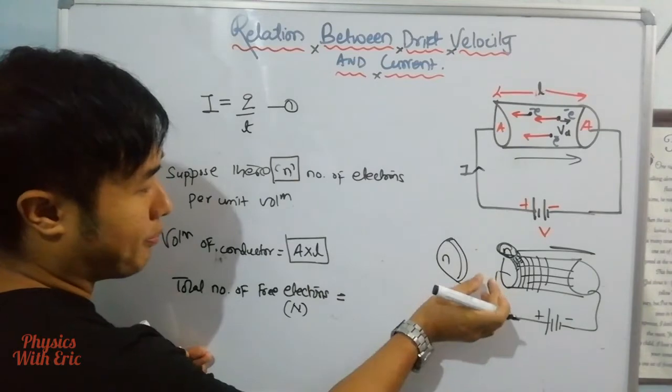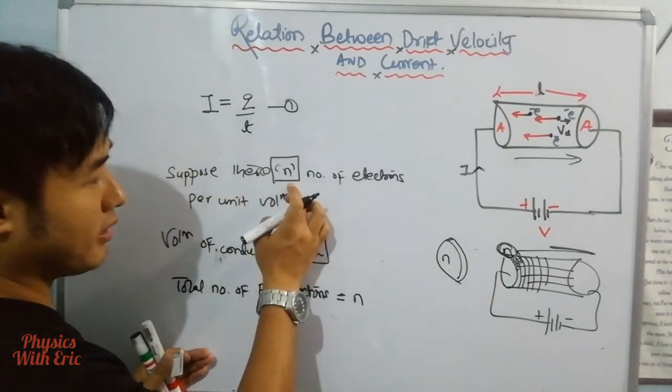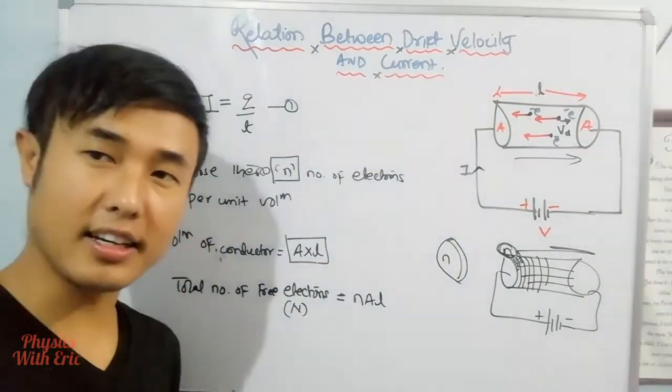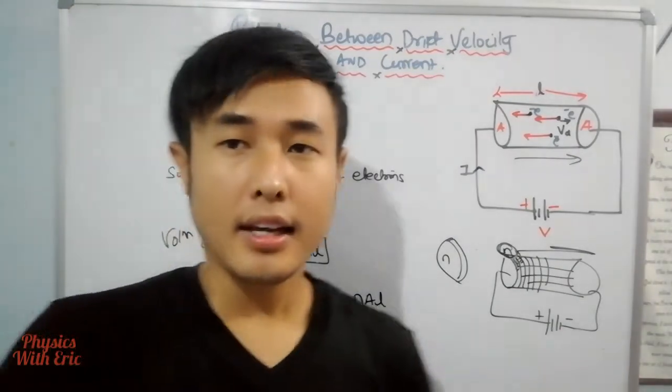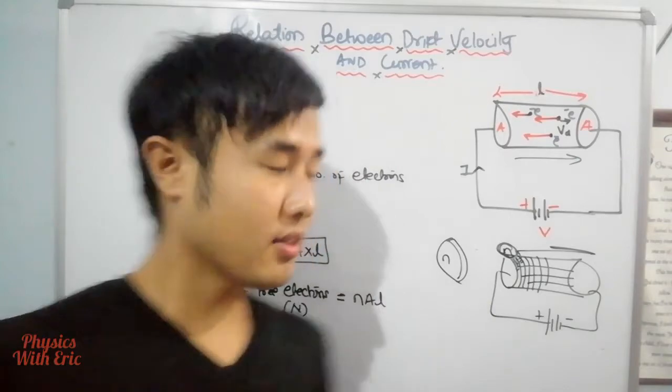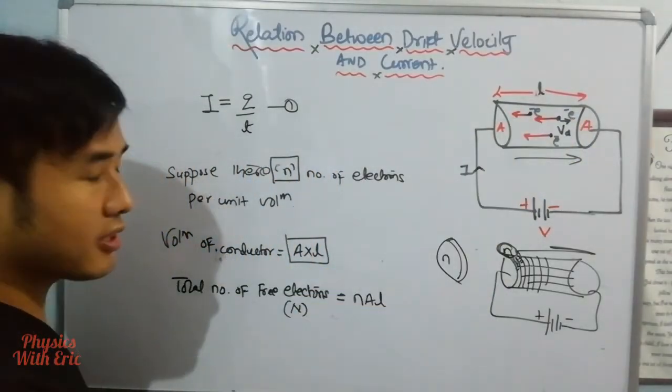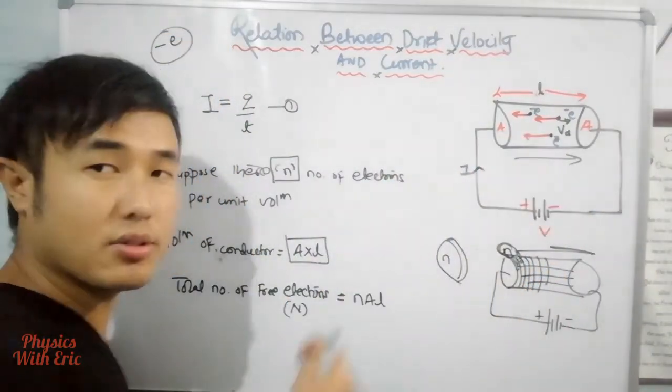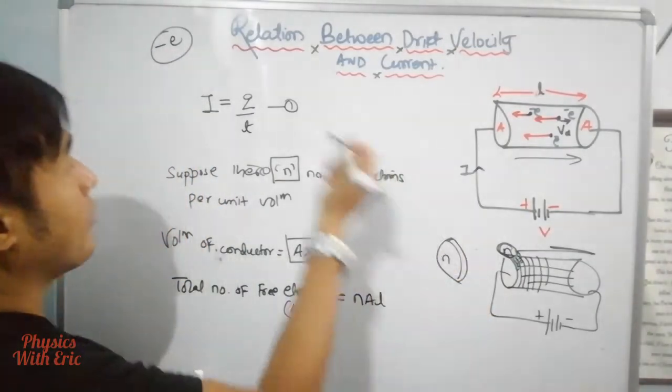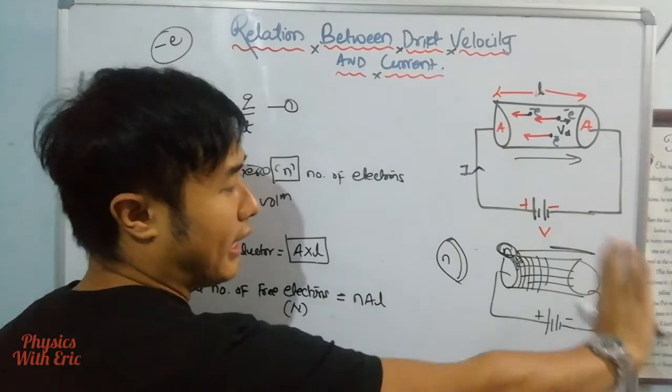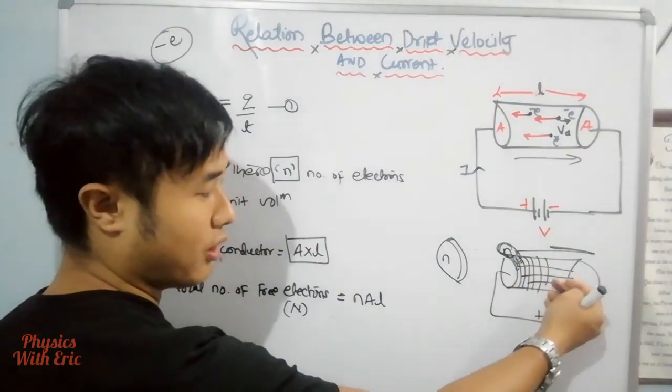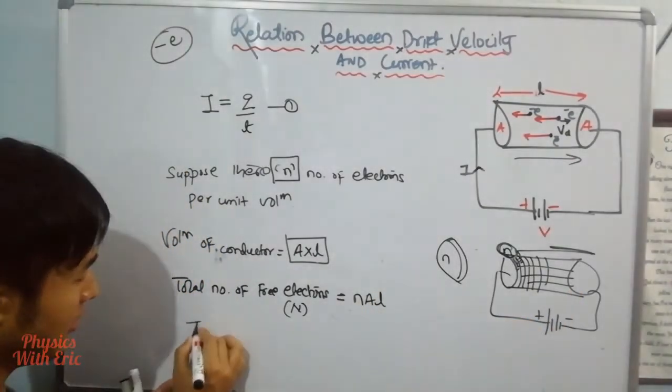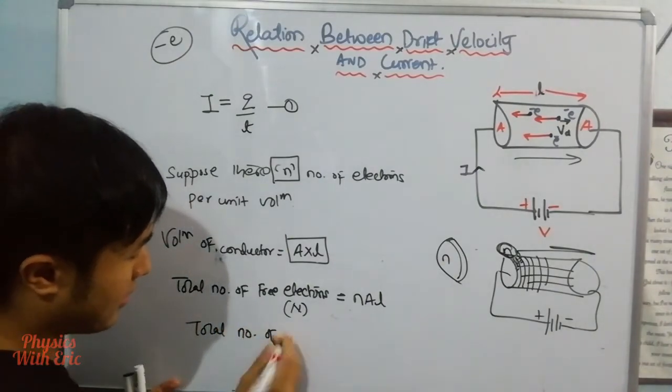Now for charge magnitude, each electron has charge e, the elementary charge. So the total charge equals e times the total number of electrons, which is e times n times the volume.